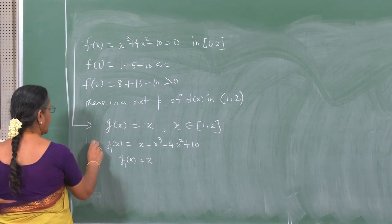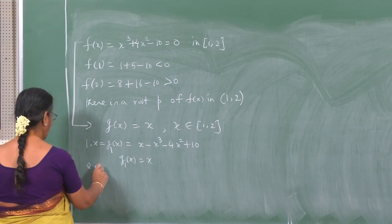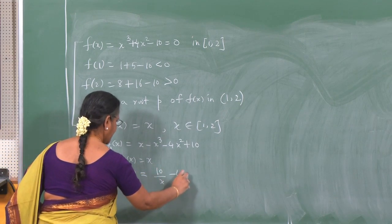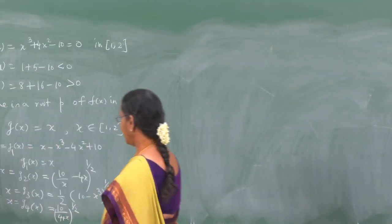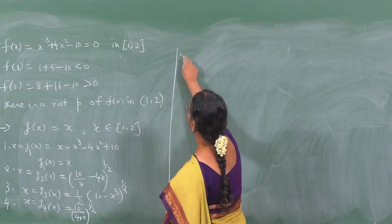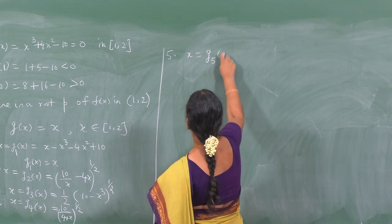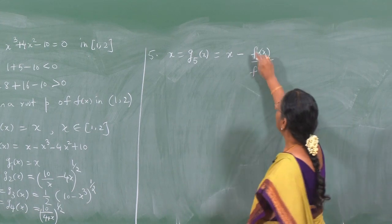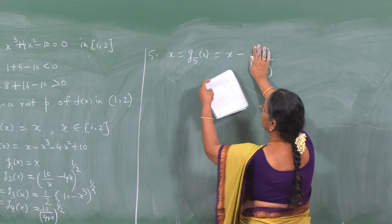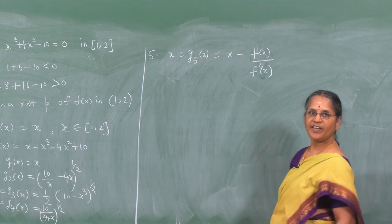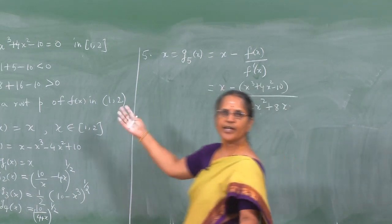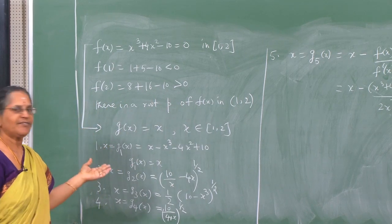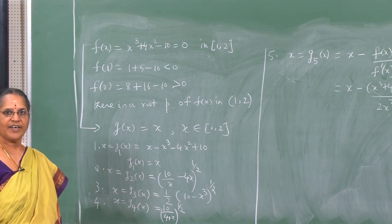A second form is x = g₂(x) = (10/(x) - 4x)^(1/2). A third form is x = g₃(x) = (1/2)(10 - x³)^(1/2). We can also write x = gφ(x) = x - f(x)/f'(x), because when f(x) = 0 this term vanishes and x = x. One can write f(x) = 0 in several different forms, and we have presented five such forms.